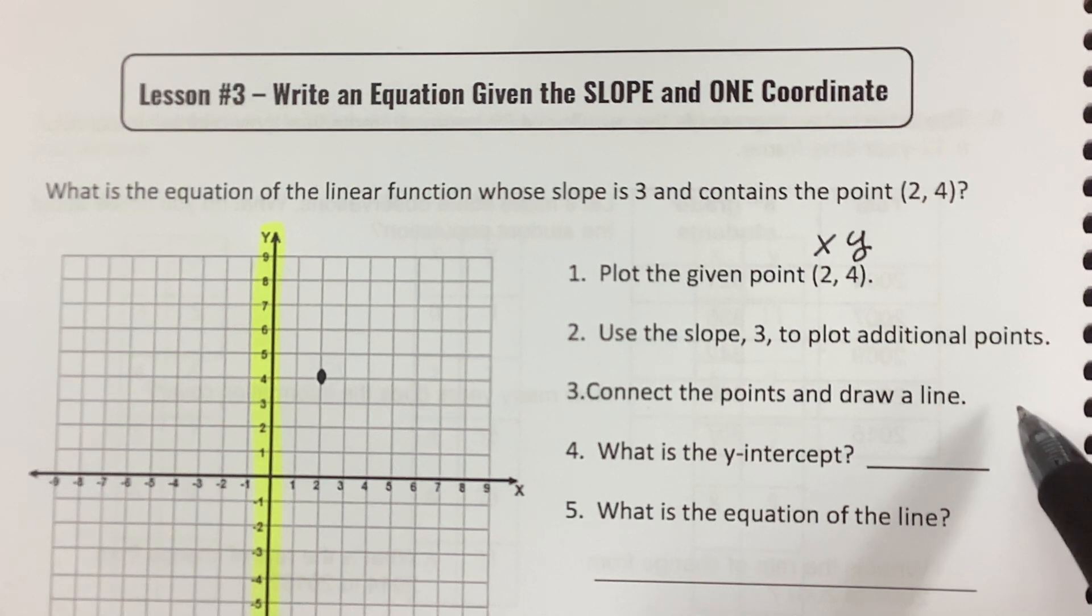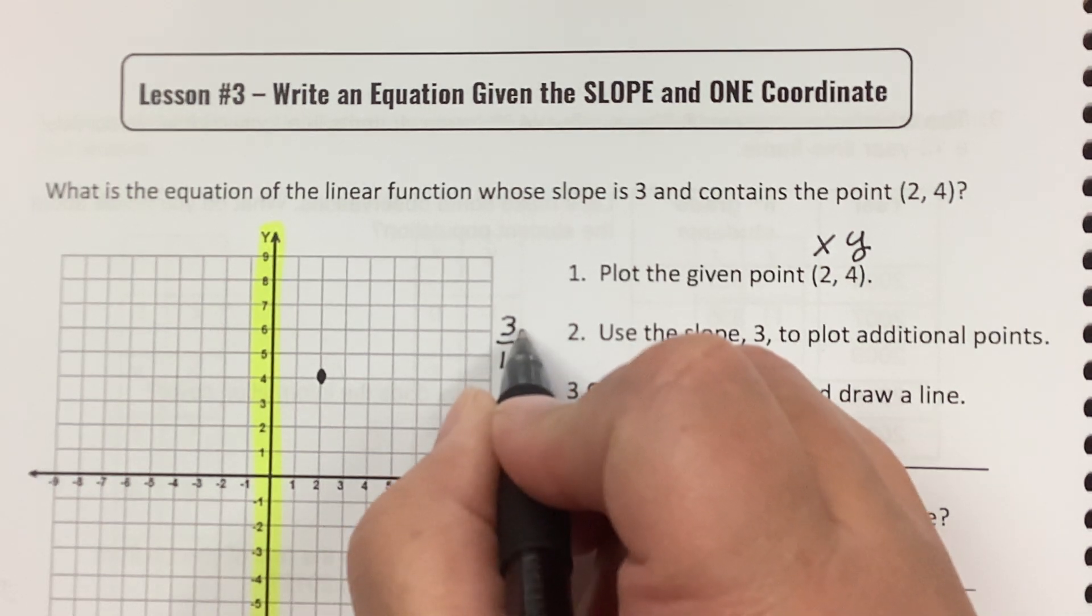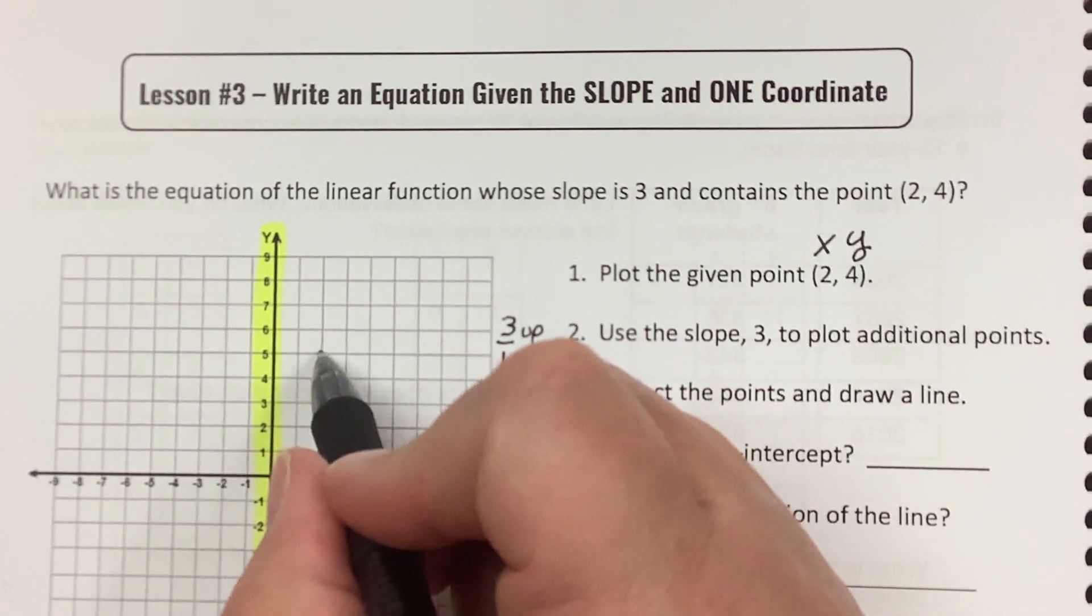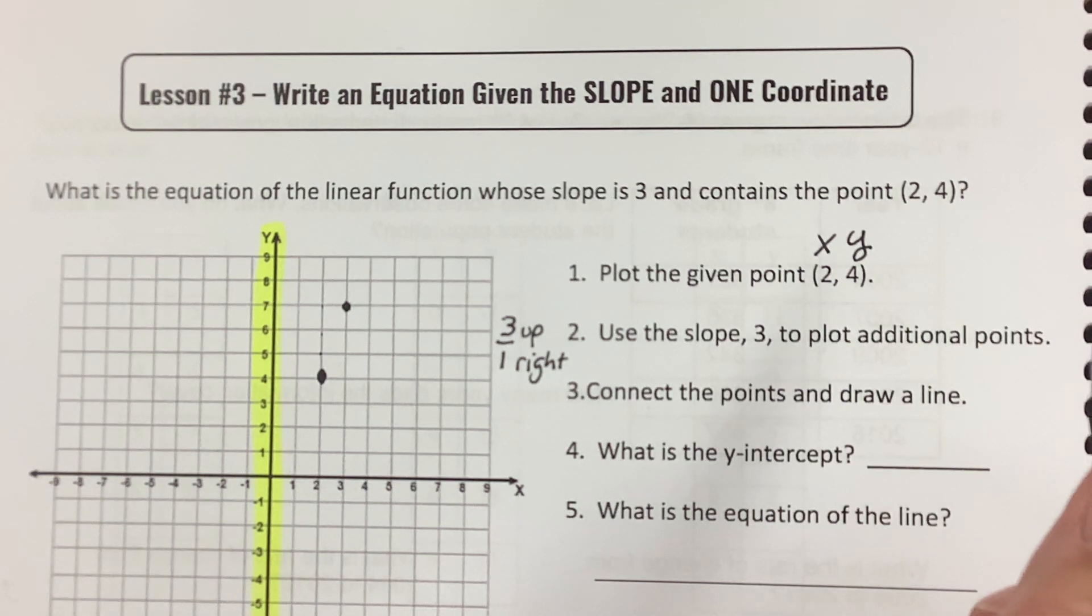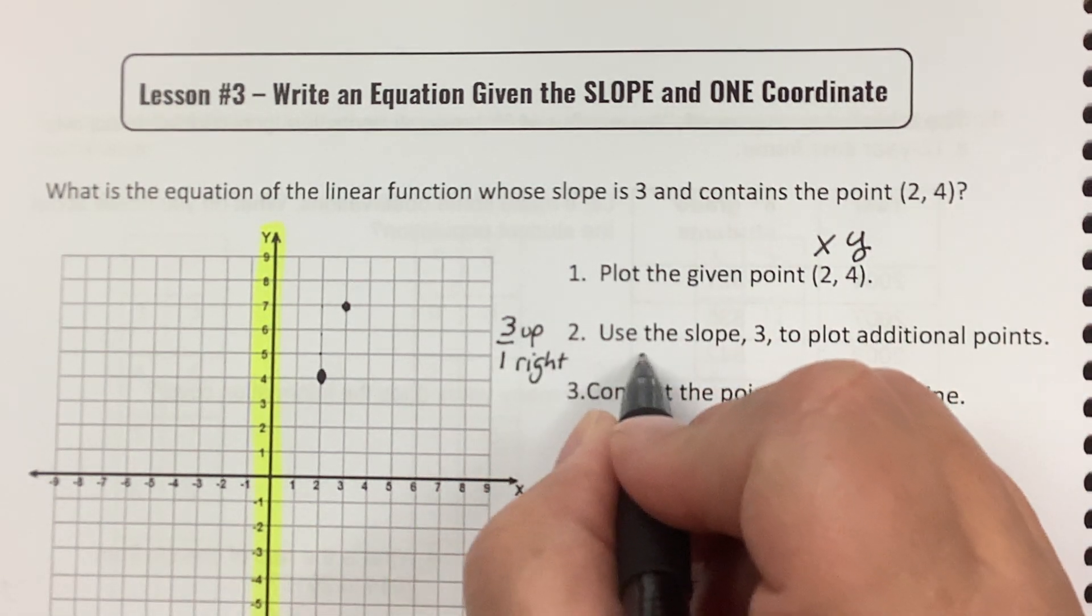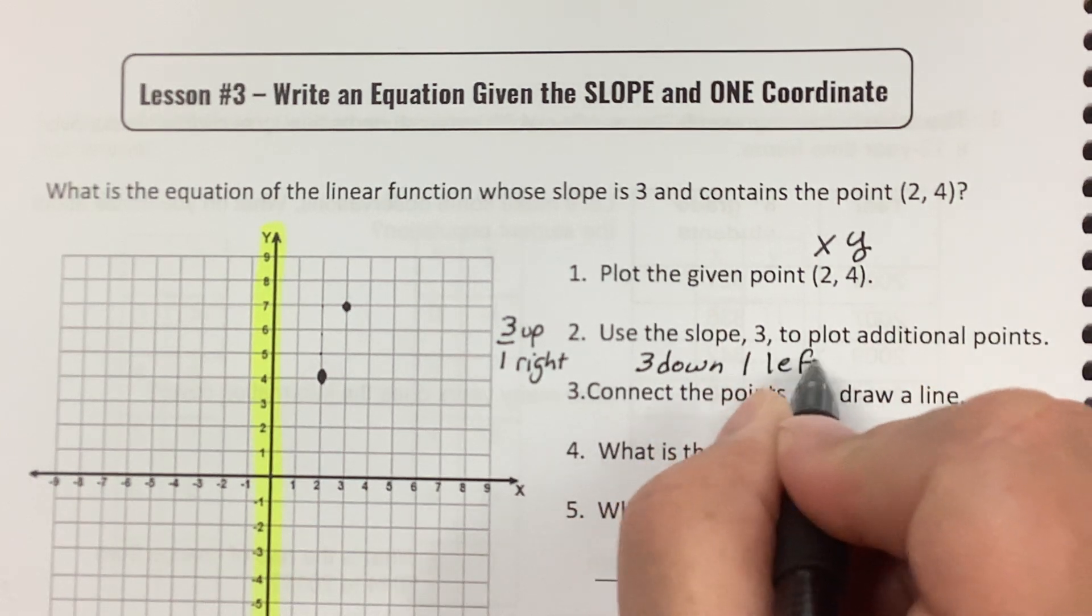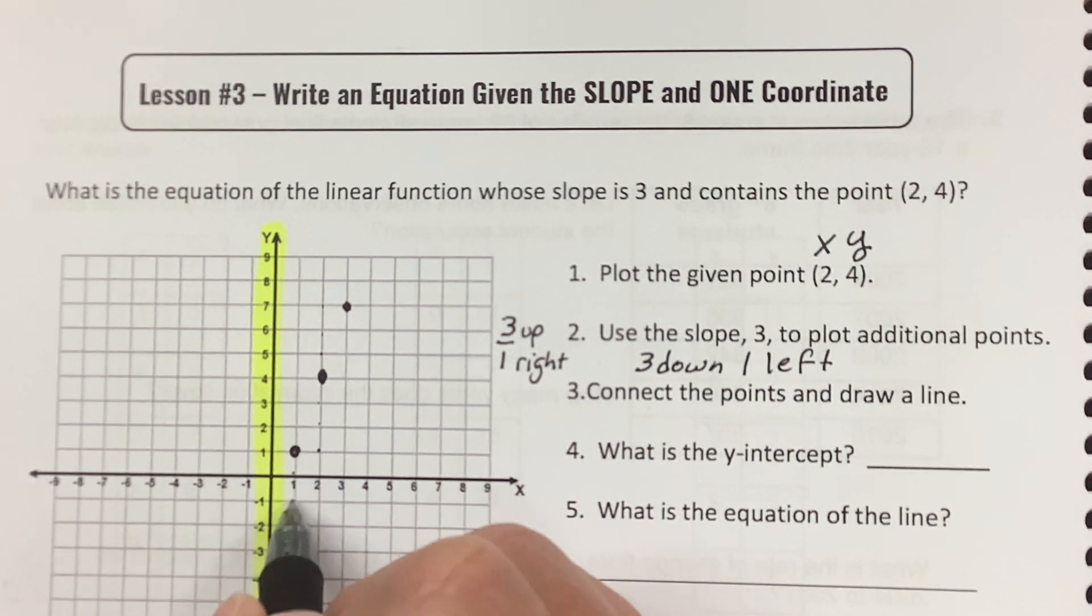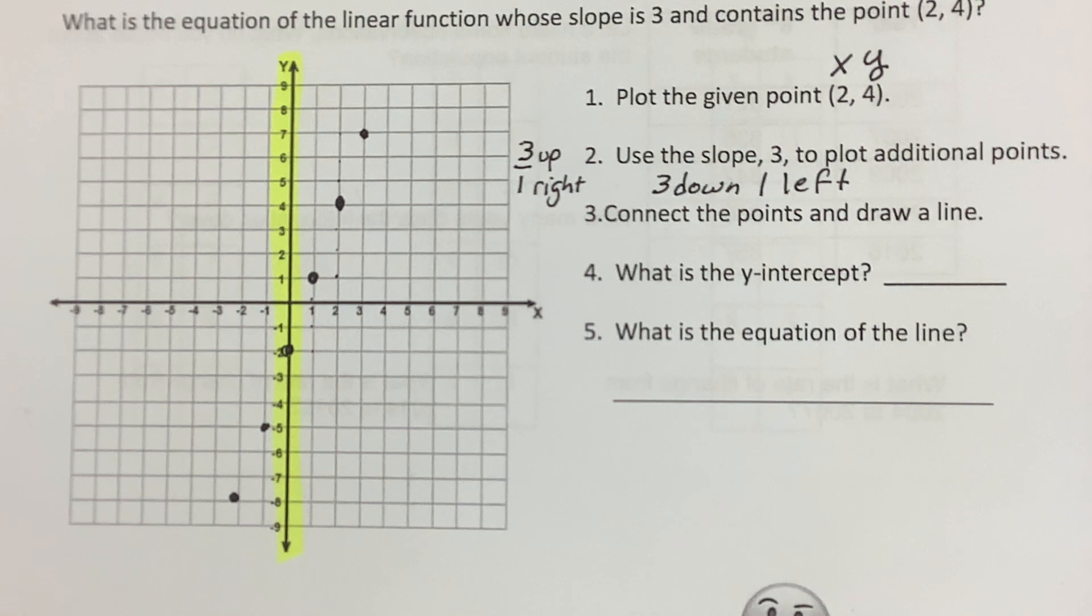Use the slope 3 to plot additional points. Now, 3 is really 3 over 1, and I'm going to go up 3 and right 1. So from here, up 3, 1, 2, 3, right 1. I could reverse the whole thing, and then if I reverse 3 up, that's 3 down. And if I reverse 1 right, it's 1 left. So you have to reverse both. So now I'm going to go 1, 2, 3 down, 1 left. I'm going to do that all the way across, 3 down, 1 left, until I kind of cover my whole coordinate plane. So I'm going to grab my ruler.